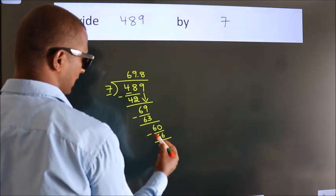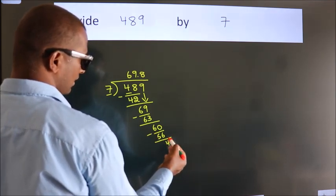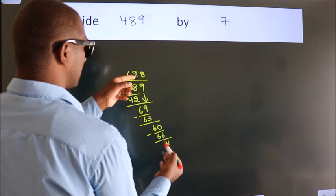Now we subtract. We get 4. After this, we already have the decimal.